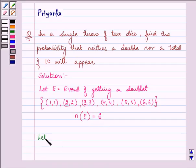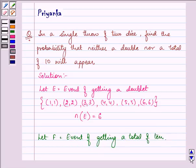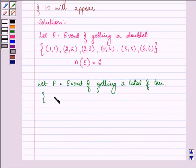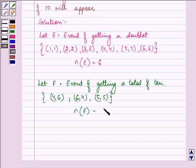Similarly, let F be equal to the event of getting a total of 10. It will include the elements (4,6), (6,4), and (5,5). That means the number of elements in this event is equal to 3.